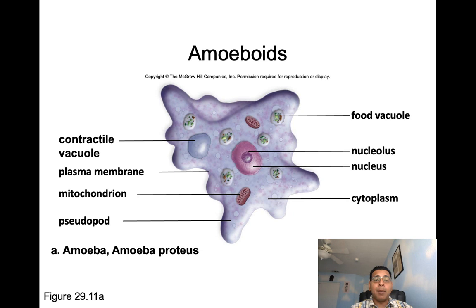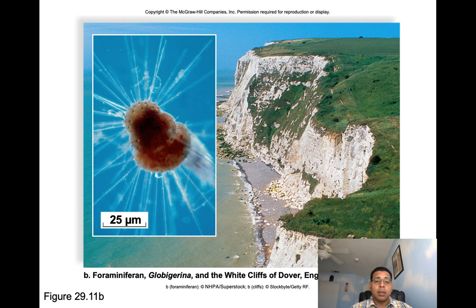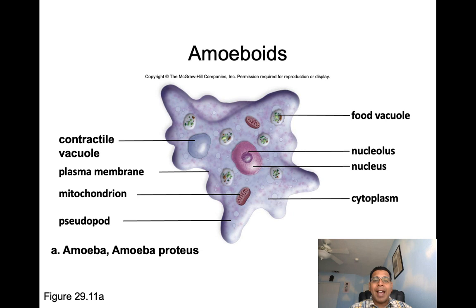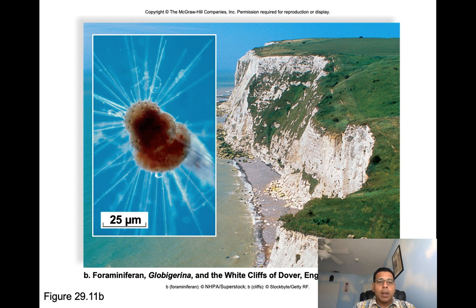Amoeboids usually live in aquatic environments such as oceans and freshwater lakes or ponds. They contain food vacuoles, contractile vacuoles, mitochondria, and a nucleus with a nucleolus. Here we can appreciate some planktonic organisms including foraminifera and globigerina, and we can appreciate the white cliffs of Dover, England, as well as some radiolarian tests.